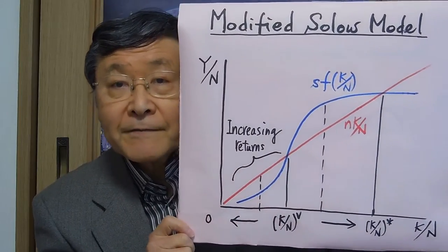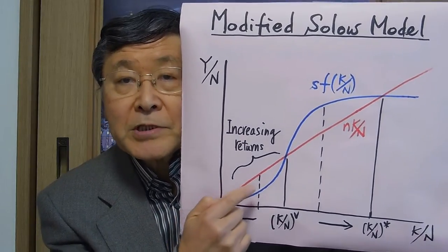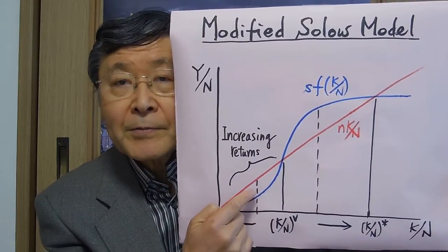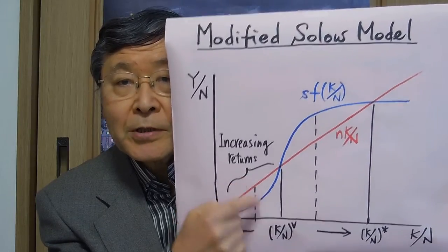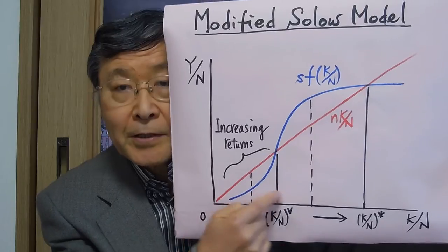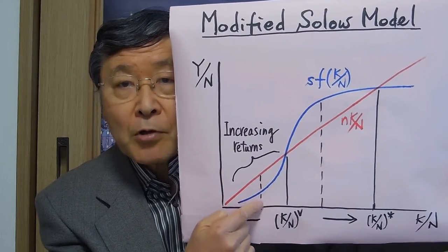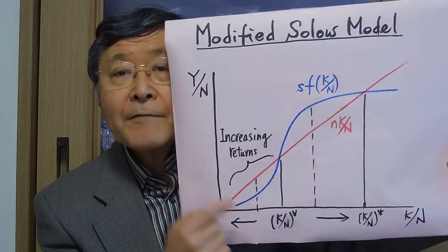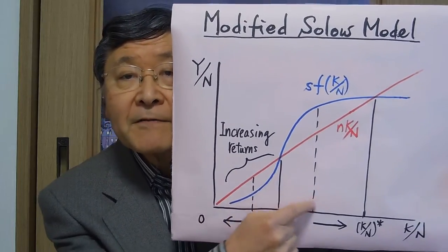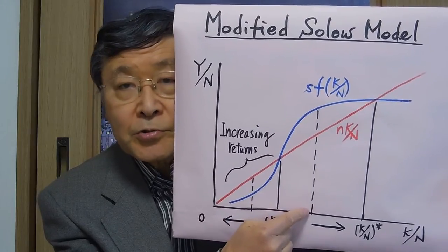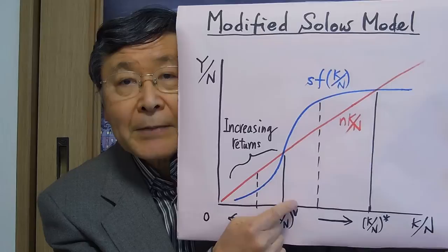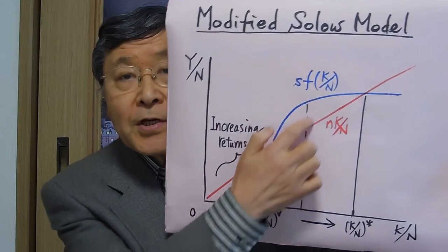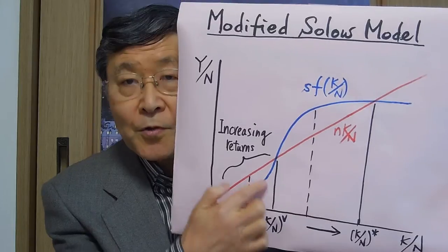However, there is another intersection between the two lines, which gives the critical value of the capital-labor ratio. If the initial capital-labor ratio is below this critical value, then the growth rate of capital stock is less than the growth rate of population, so the capital-labor ratio will decrease — the economy becomes poorer over time, which is the vicious cycle range. If the initial value is above this level, the capital-labor ratio increases towards the steady-state equilibrium — that is the virtuous cycle area.